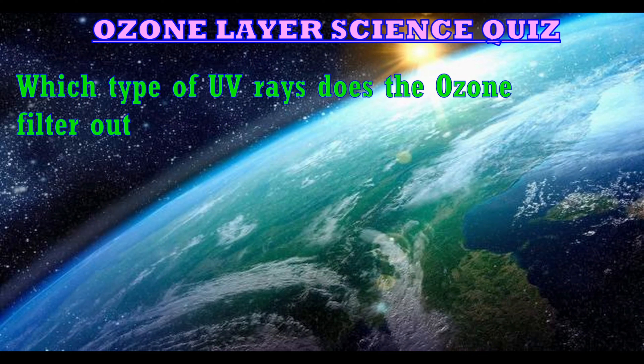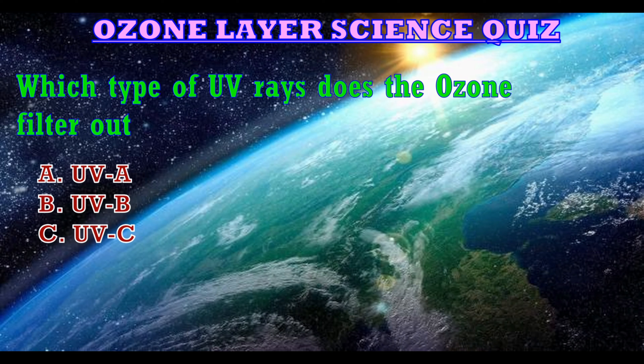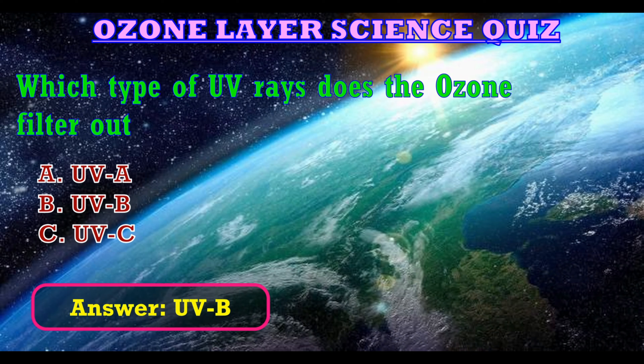The next question is: which type of UV rays does the ozone filter out? The options are: A. UVA, B. UVB, C. UVC. The correct answer is UVB.